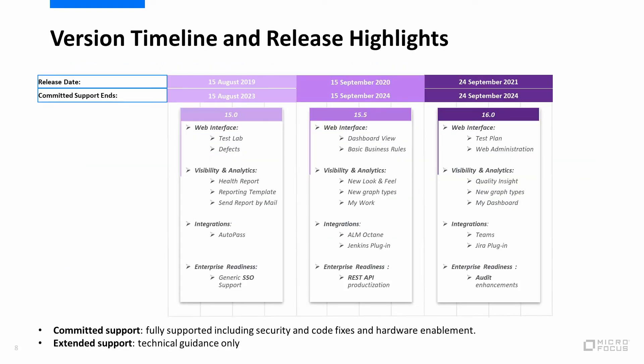To summarize this part, let's first align on the support terminology. Committed support means fully supported, including security and code fixes and hardware enablement. When the committed support ends, you can have extended support for technical guidance only. All versions below 15.0 are either out of committed support or will be so during next year. Our latest version is ALM 16, which was released last September and will be supported until September 2024. We recommend upgrading to the latest version to enjoy both the committed support and the benefits reviewed in previous slides.